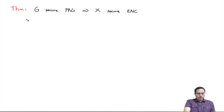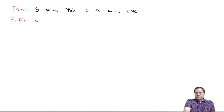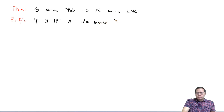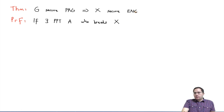When you think about our proof strategy, remember we do the proof using the contrapositive. So if there exists some PPT adversary A who breaks the scheme X — remember breaking scheme X would mean winning this game with 1/2 plus non-negligible probability.